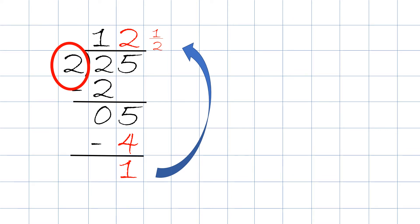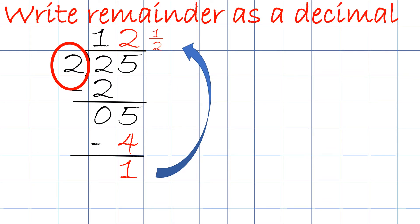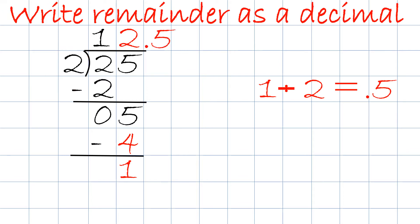And sometimes the assignment may say write the remainder as a decimal. So we take that fraction — one half — and we take the top number divided by the bottom number. So 1 divided by 2 will equal 0.5. And so we write the answer as 12.5.